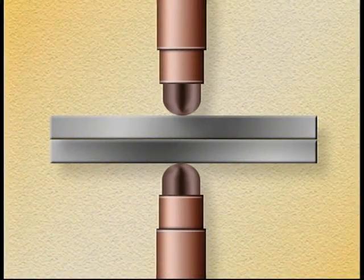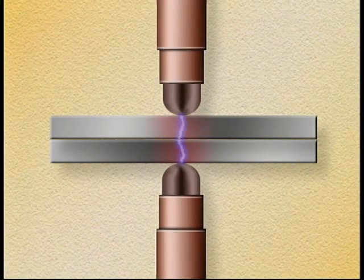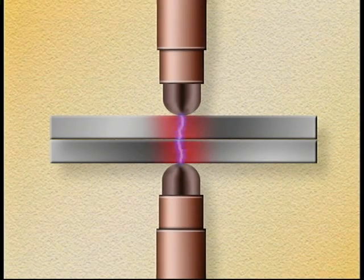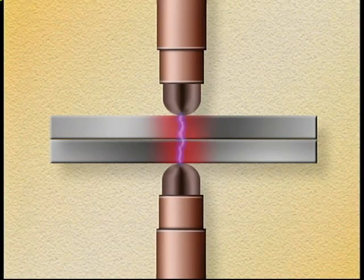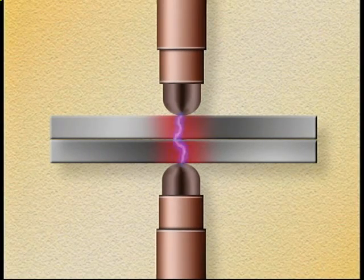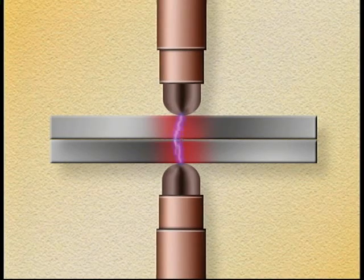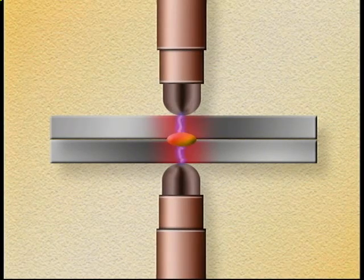Resistance spot welds are formed by heating a spot of metal electrically while applying pressure in the form of squeeze force. The heat brings the metal to a plastic state and the pressure pushes the heated metal from the two surfaces together, creating a weld nugget that joins the two pieces.